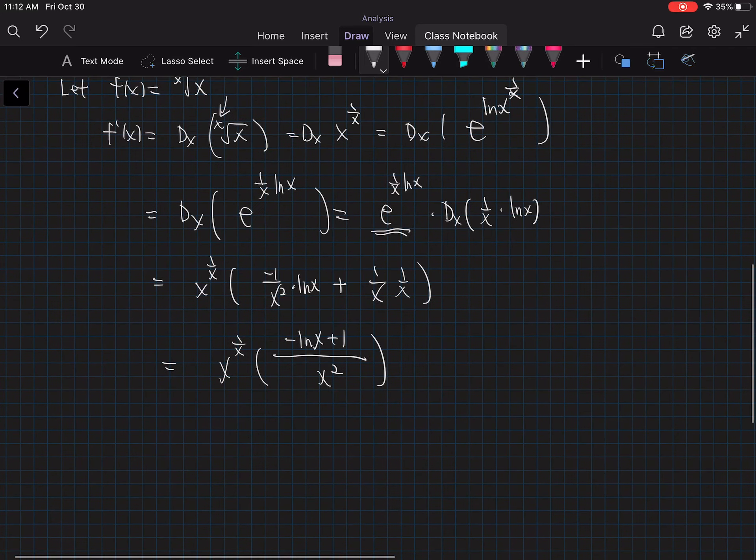Okay. Or we can look at this as x to the 1/x times (1 minus ln(x))/x^2. We know this eventually going to be negative for x is greater than e, right? At x equals e that's equal to 1. So when x is greater than e, this becomes negative.